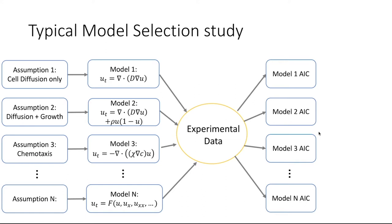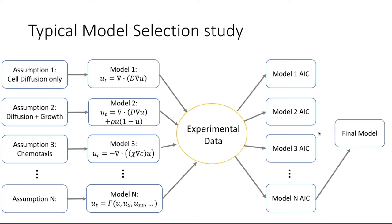This is often called an information criterion — you could think of this as like an Akaike information criterion. We then select whichever model that information criterion tells us is most informative. But the issue here is that we have to actually specify all n different models. Just specifying that one mathematical model during my PhD dissertation took essentially five years. And so if n is something like 100, you definitely don't want to spend the next 500 years coming up with every single possible model.